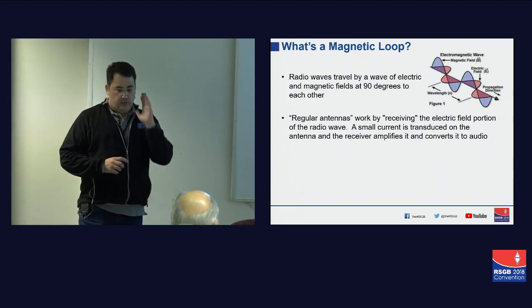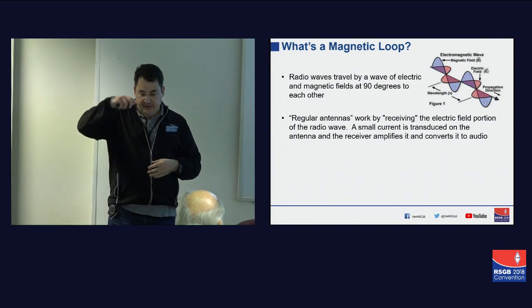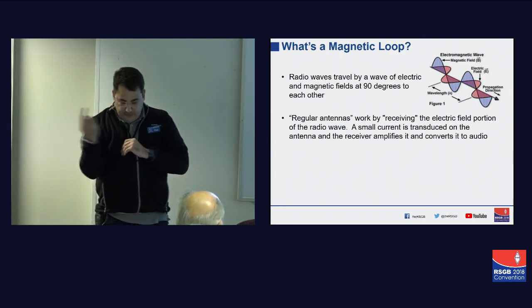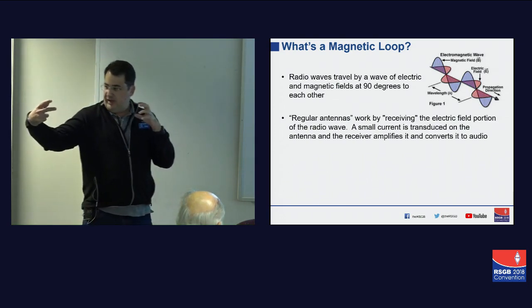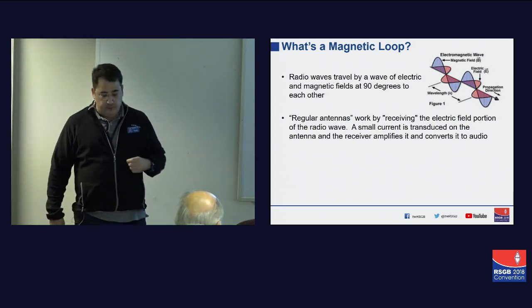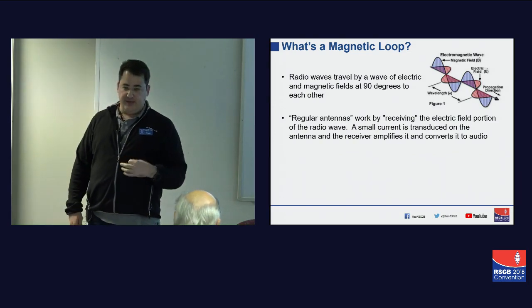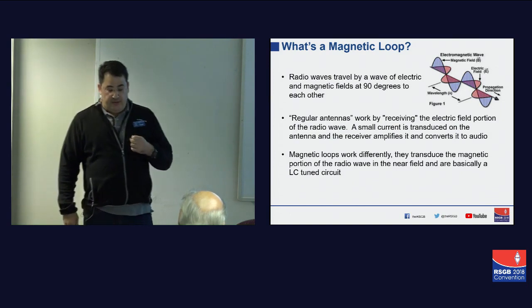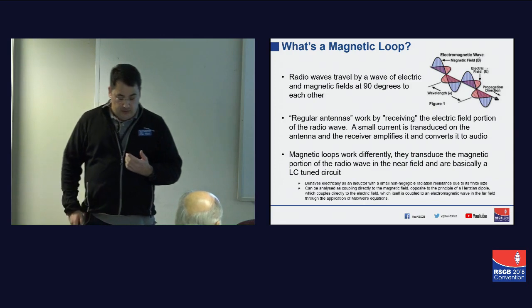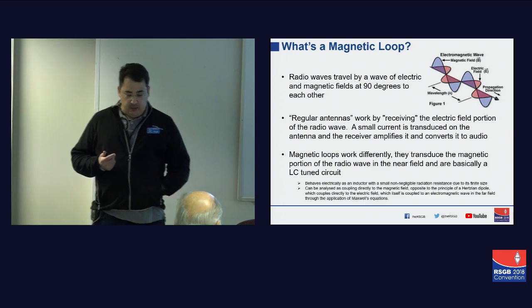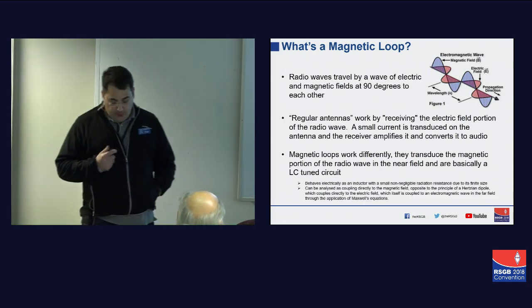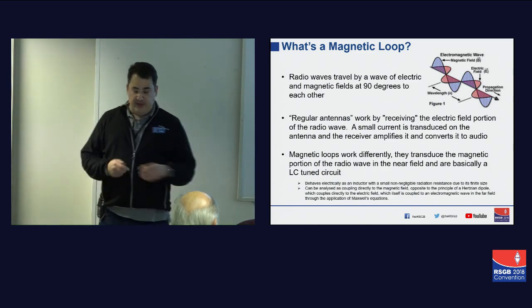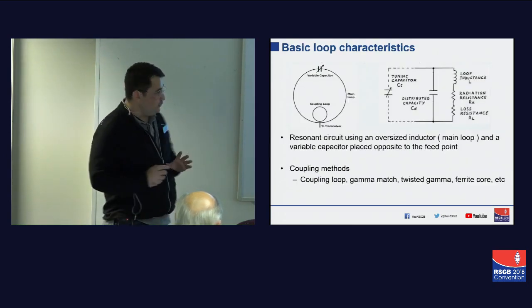Just to level-set: radio waves are electromagnetic — there's an electric field, an E-field, and at 90 degrees from that you have the magnetic field. A radio wave will resonate an electrical dipole or regular antenna by receiving the electrical field portion, and a small current is transduced into the antenna which the receiver amplifies. A magnetic loop works differently — it transduces the magnetic portion of the radio wave in the near field and is basically a tuned LC circuit — coupling directly to the magnetic field, opposite to the principle of the Hertzian dipole.